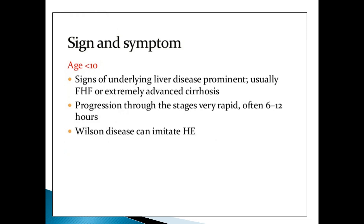When age is less than 10, it is the acute type of fulminant hepatic failure, with signs of underlying liver disease prominent, including extremely advanced cirrhosis leading to fulminant hepatic failure. Progression through the stages is very rapid — after 6 to 12 hours the patient becomes unconscious. Wilson's disease or hepatolenticular degeneration can imitate hepatic encephalopathy, and if very severe, can itself cause fulminant hepatitis.